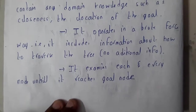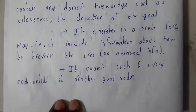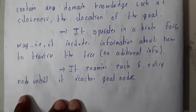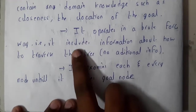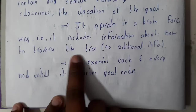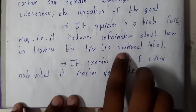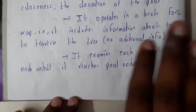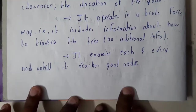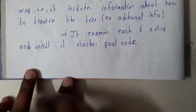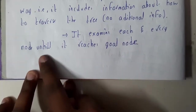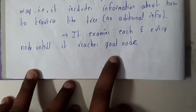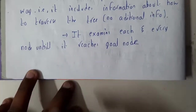Blind search operates in a brute force way - with no information, it goes in a blind way, moving in whatever direction it chooses. It includes only information about how to traverse the tree, nothing additional. It knows where to go and how to go, but not in the most appropriate way. It examines each and every node until it reaches the goal node, whatever comes in the path gets analyzed.